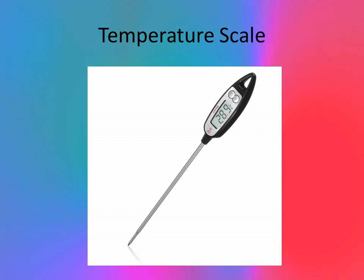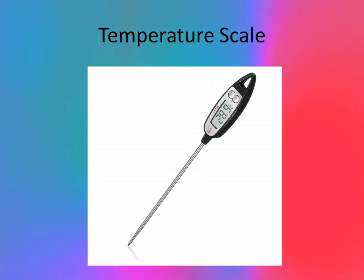Next, we have temperature scales, used to measure heat intensity. We have different thermometers used for different purposes in food preparation — like for meat, candy or deep fat frying. Other small thermometers are hung or stand in ovens or refrigerators to check the accuracy of the equipment's thermostat. The main function of a temperature scale is to measure heat intensity.